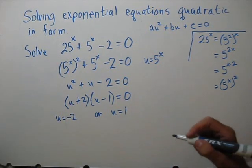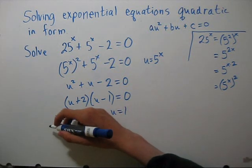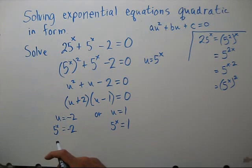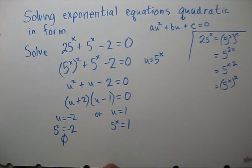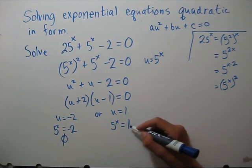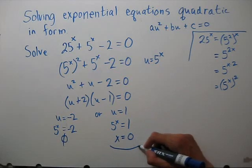We really want to solve for x rather than u, so let's replace our u with 5 to the x. Now 5 to the x is always a positive number, so it will never equal negative 2. So this equation has a solution of empty set. 5 to the x equals 1. Well, 5 to the 0 power is 1, and that's the solution.